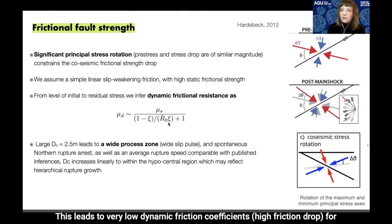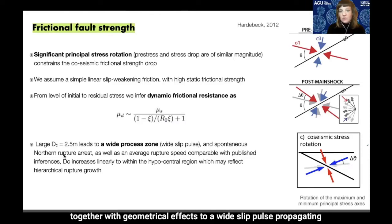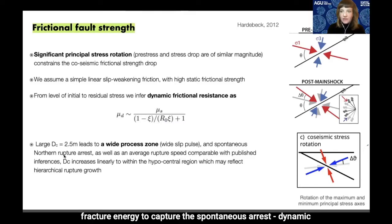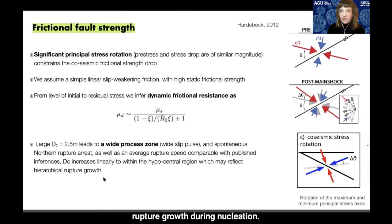This leads to a very low dynamic friction coefficient ranging between 0.1 and 0.2. We also assume a large critical slip-weakening distance of 2.5 meters, leading to a wide process zone and — together with geometrical effects — a wide slip pulse propagating along arc. We need to account for this large frictional energy to capture the spontaneous arrest of rupture in the north as well as an average rupture speed consistent with published inferences. D_c increases linearly from a very small value during rupture initiation to capture hierarchical rupture growth during nucleation.